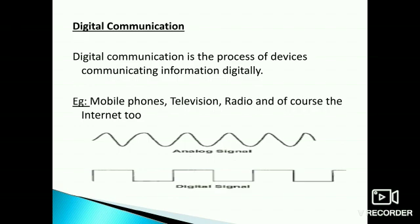Digital communication is a process of devices communicating information digitally. Examples are mobile phones, television, radio, and the internet. This is an example schematic diagram showing analog and digital signals.